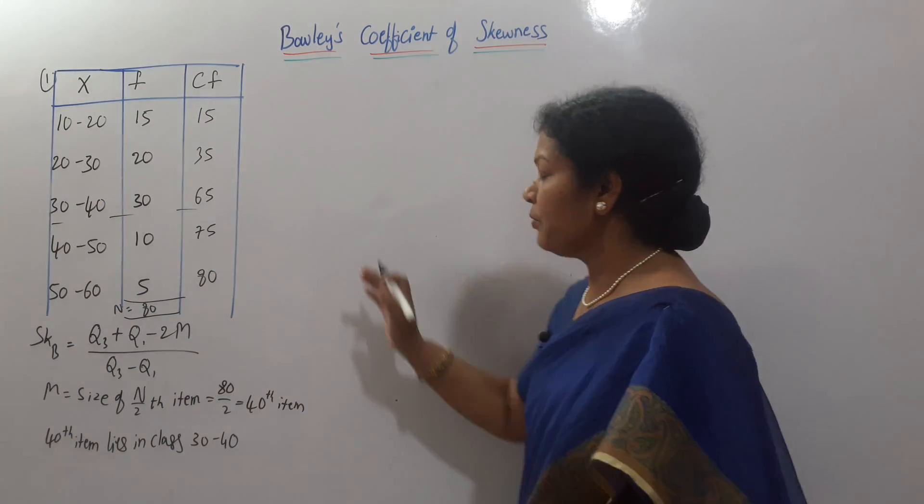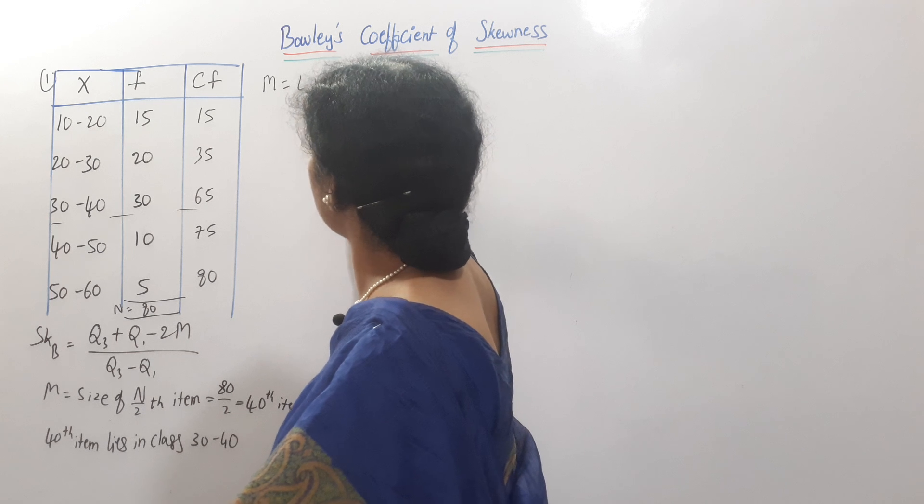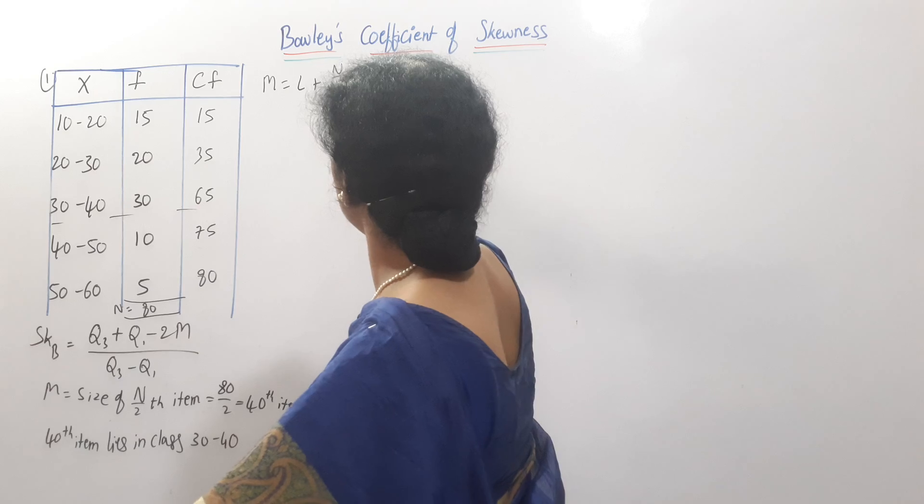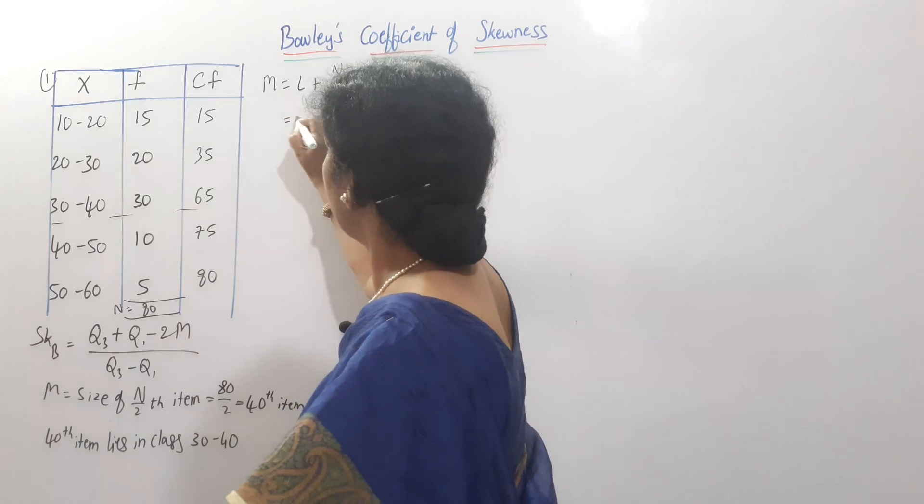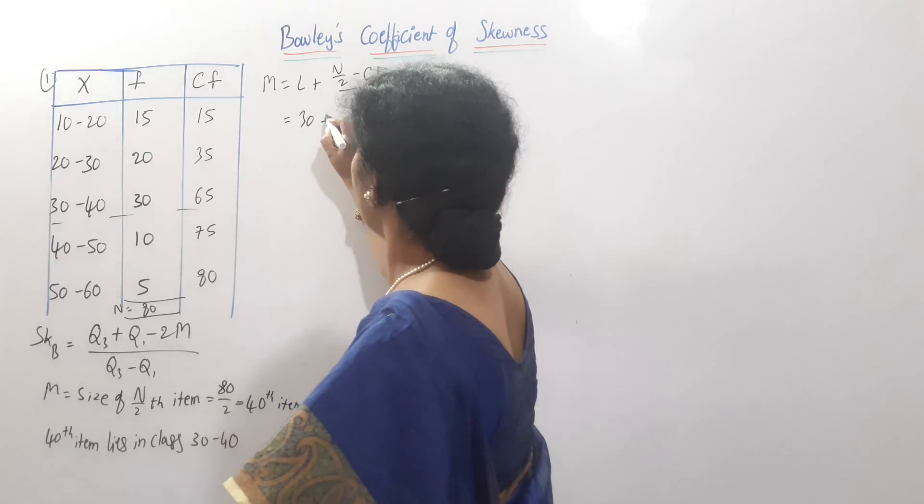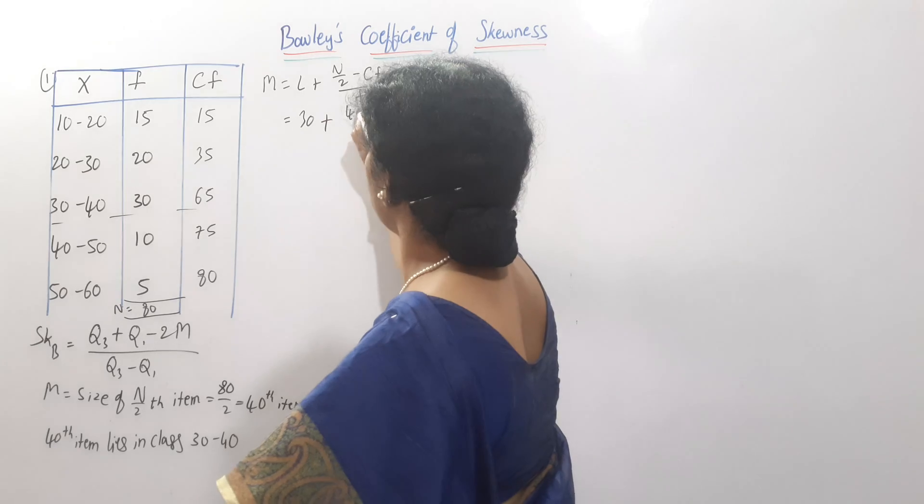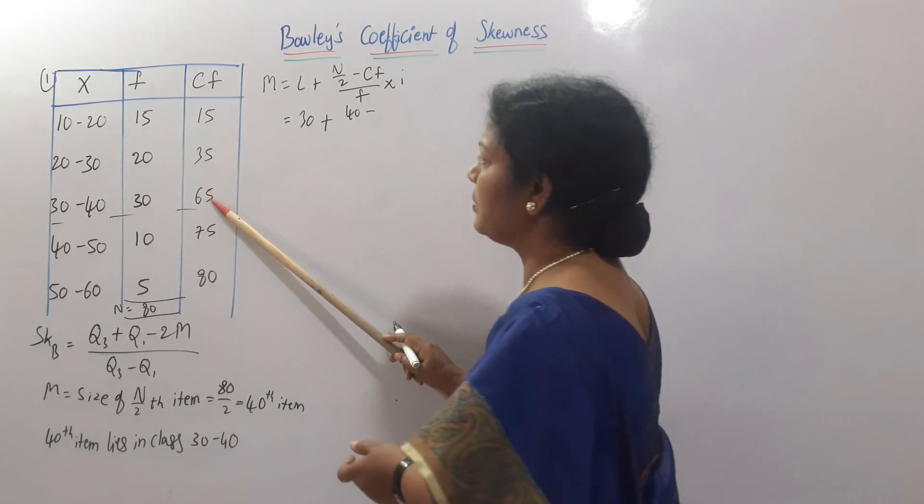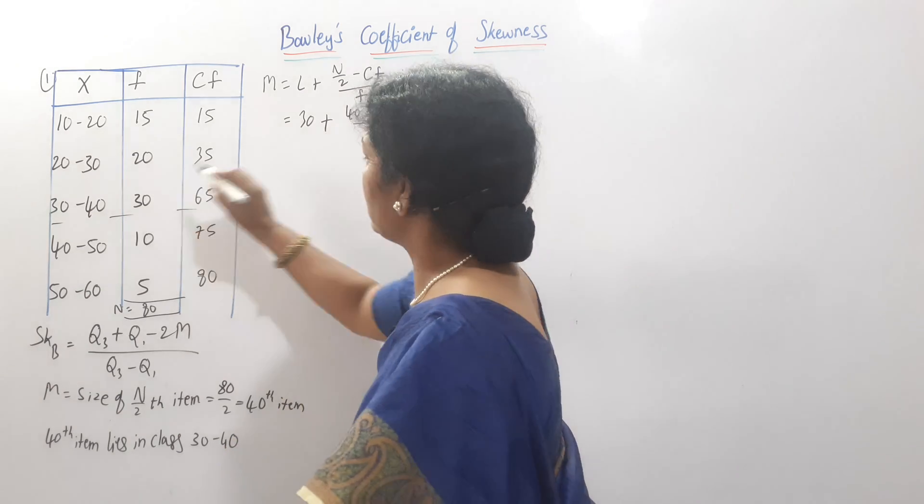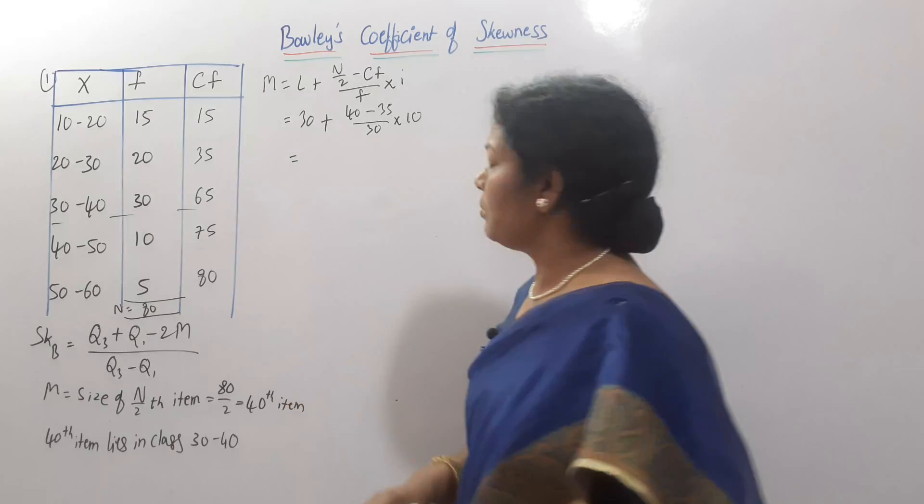Now, we will go ahead. Let the second formula, median is equal to L plus N by 2 minus CF by frequency into I. L is here 30. N by 2 is already we have calculated 40. 40 minus CF, CF means above item. This is 35. Frequency is 30. Class interval is 10.